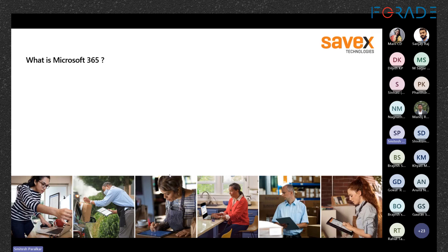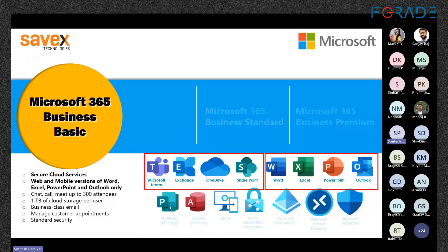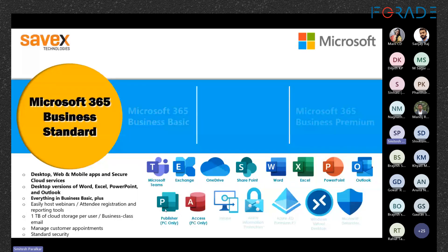Moving to Microsoft 365 Business Standard — the shortcoming of Business Basic was the lack of downloadable desktop apps. This is available in Business Standard. You can get downloadable desktop versions of Word, Excel, PowerPoint, and Outlook, plus web and mobile versions as well. You can install these desktop apps on up to 5 devices at a time, across Mac OS or any operating system.